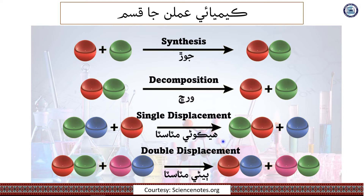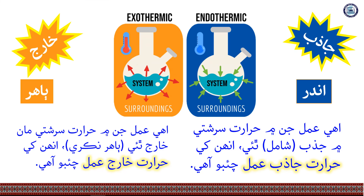In a double displacement reaction, the ions of two compounds exchange places. Some reactions absorb energy from the surroundings — these are called endothermic reactions. In an endothermic system, the surrounding temperature decreases as heat is absorbed by the system.